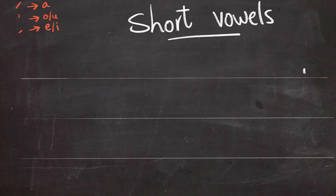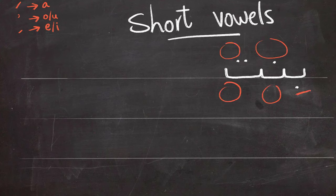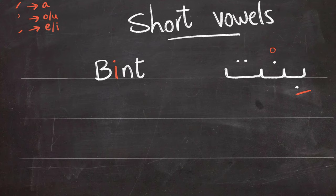An example that I gave earlier was bint. You noticed I didn't put any signs above or underneath the noon or the ta. What does that mean? Why is this like that? Well this is going to be the fourth symbol that we're going to learn today and that is this small round symbol. This small round symbol means sukoon or no vowel. You could choose to put it or leave it completely without any vowels.